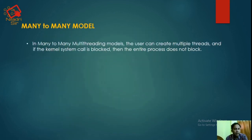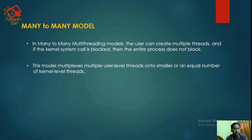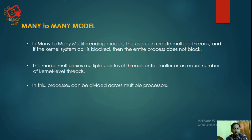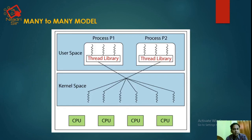Next, the many-to-many model. In the many-to-many multithreading model, the user can create multiple threads. If the kernel system call is blocked, the entire process does not block. The model multiplexes multiple user-level threads onto an equal or smaller number of kernel-level threads. Processes can be divided across multiple processors. In the diagram, process P1 and P2 are each given to different kernels, and different kernel spaces perform different operations.